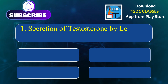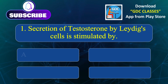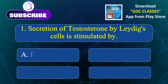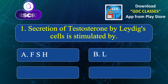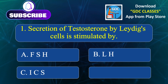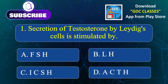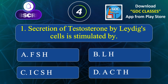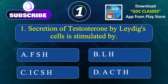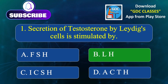Secretion of testosterone by Leydig cells is stimulated by: Option A. FSH, Option B. LH, Option C. ICSH, Option D. ACTH. Correct answer is Option B: LH.